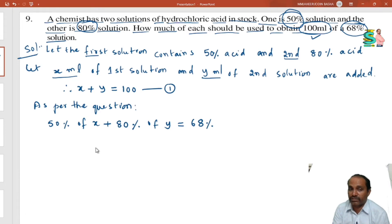50 percent of first solution, 80 percent of second solution y is equal to 68 percent. So 50 by 100 x plus 80 by 100 y is equal to 68. Now, you can cancel zeros. What is here? 50, 5x plus 80. You can write whole by 10 is equal to 60. Send this 10 to that side, 5x plus 8y is equal to 60.